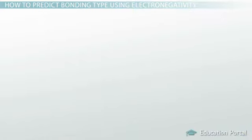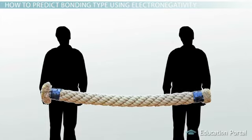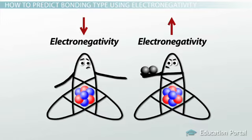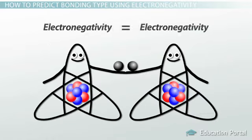On the other hand, if two people in a tug-of-war have equal strength, the rope will not shift in any direction and will stay in the same place. Likewise, if you have a stronger atom with higher electronegativity, it will tug electrons in its direction and the electrons will be unequally shared. If two atoms have the same electronegativity, the electrons will not be tugged in any one direction and will be equally shared between the two atoms.